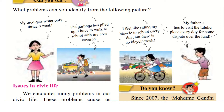Now, let us look at the second picture. The garbage has piled up and collected. He says: 'I have to walk to school with my nose covered.' The problem is that people are dumping garbage and the municipality or the people in charge are not collecting it, so it is piling up and there is a foul smell, causing this boy to suffer every time he passes it.